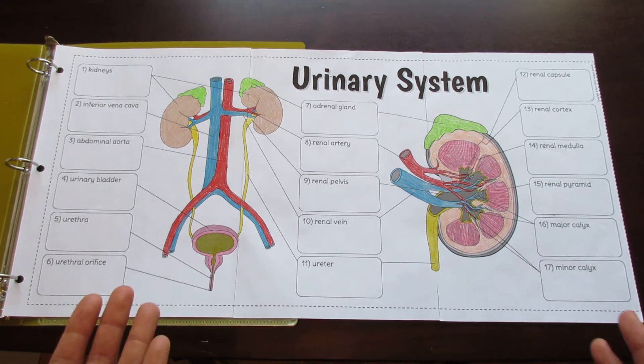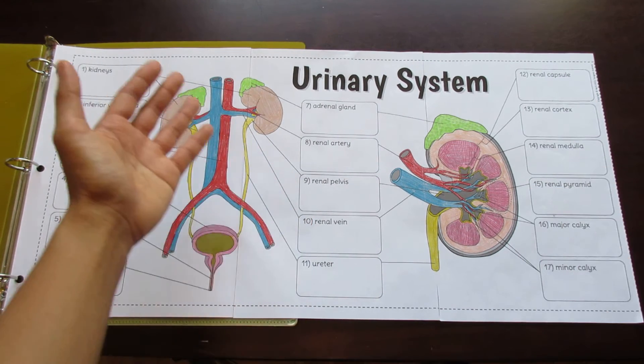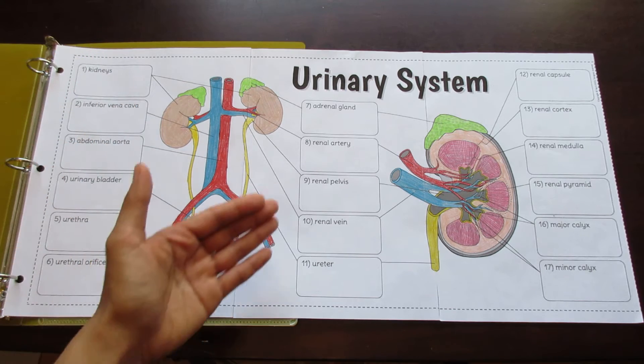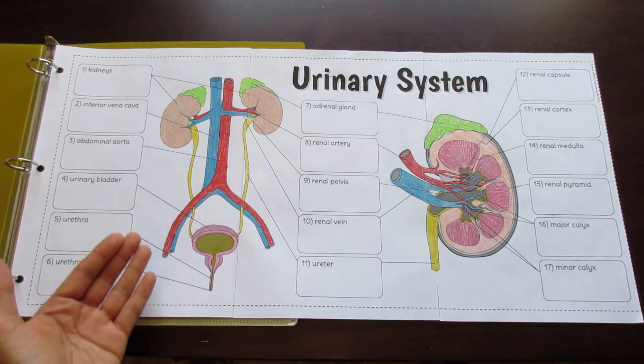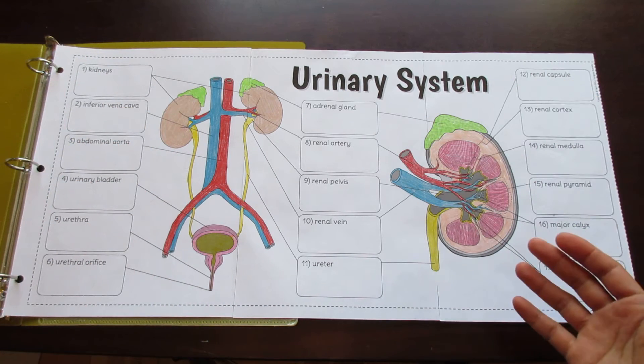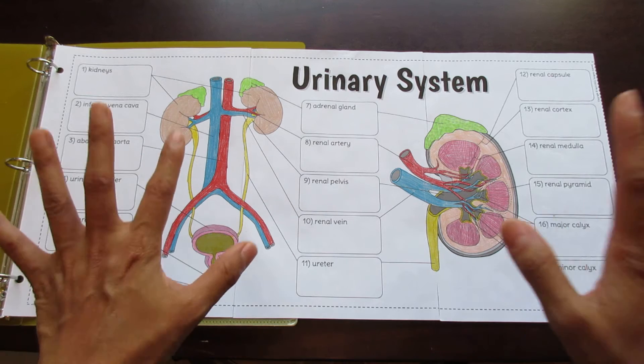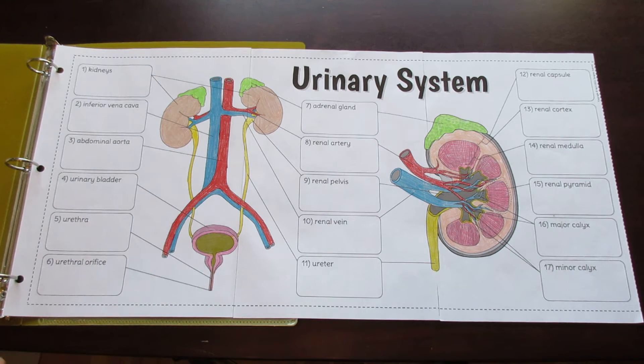This foldable is divided into two parts. On the left side you have the overview of the urinary system, on the right side you have the kidney, and each structure in both diagrams is labelled.